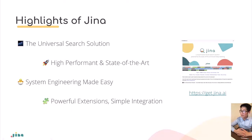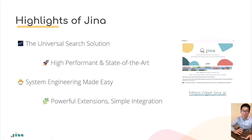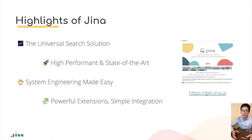GINA highlights: it's a universal search solution that can search any kind of modality and even run on a Raspberry Pi. It is high performance and state of the art. We spent a lot of time polishing the user experience to help developers onboard, making the API very simple and easy to use. When you use GINA to implement a new search solution, you'll realize it's actually much simpler than you imagined. GINA Hub provides powerful extensions and simple integration to GINA Core, which you'll see in the Flow API.